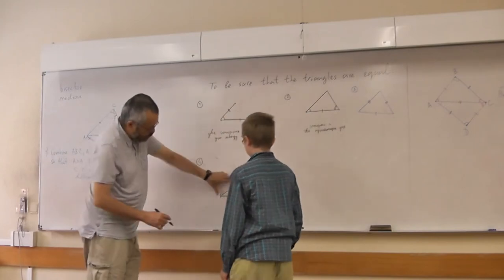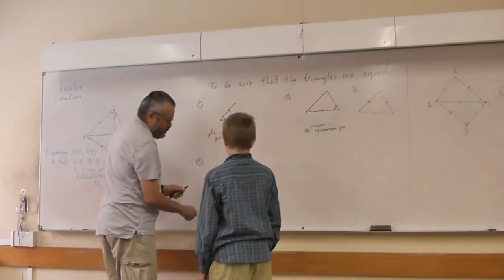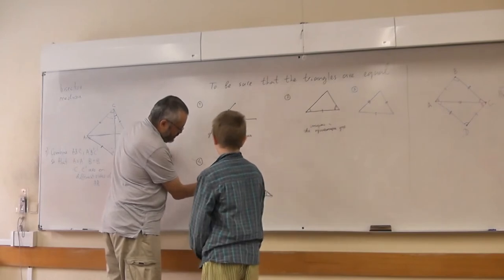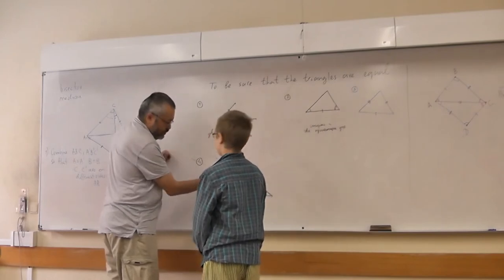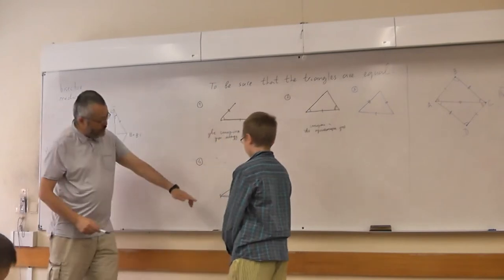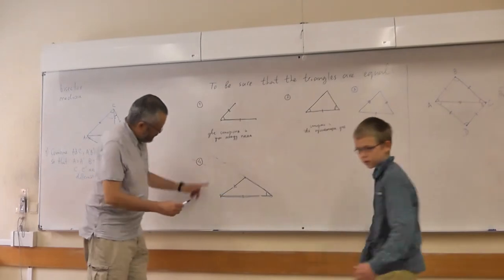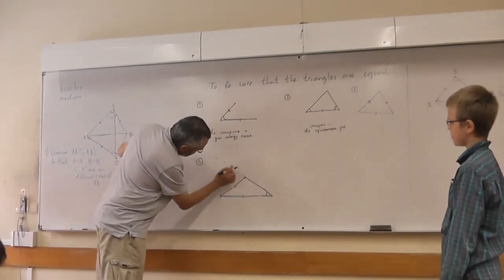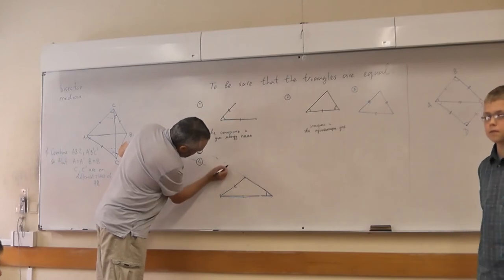And now we have the third side, we should have the same length. So the third side should be somewhere along the circle. But there are two possibilities. We can, the circle has another intersection here.